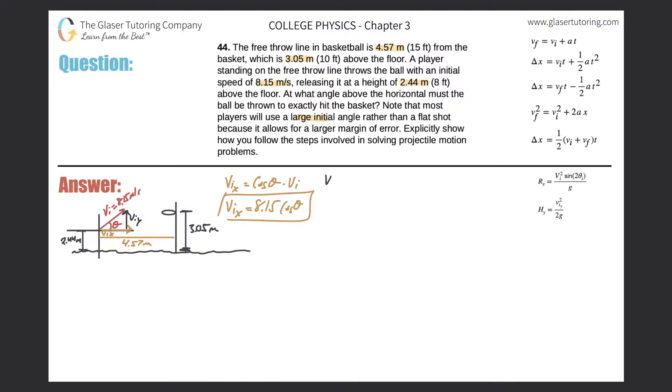We've done a bunch of examples here. So just remember that the initial velocity in the X frame will be equal to cosine of theta times the initial velocity value. So we have the initial velocity value, which we know is 8.15 times the cosine of theta. So this is one equation.